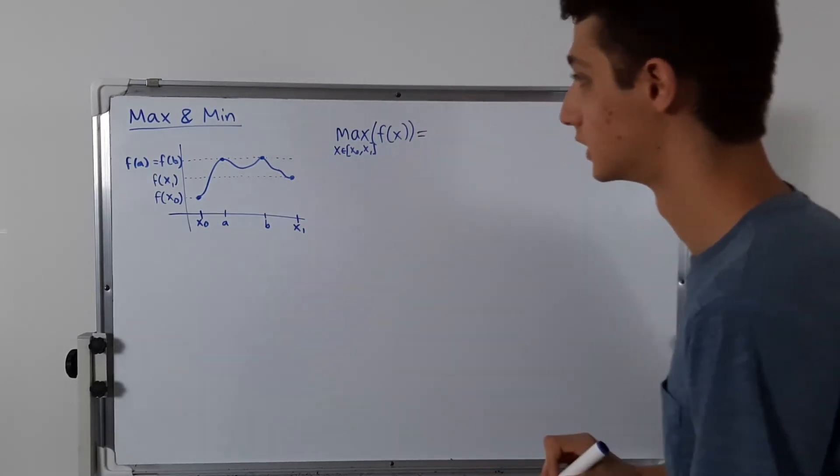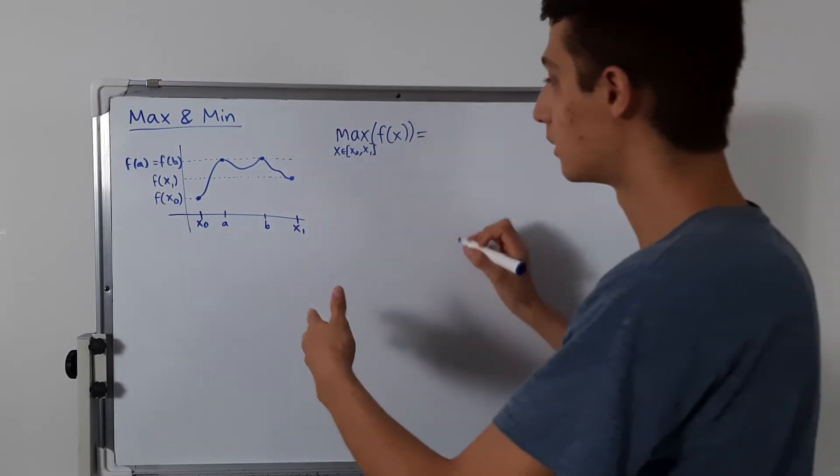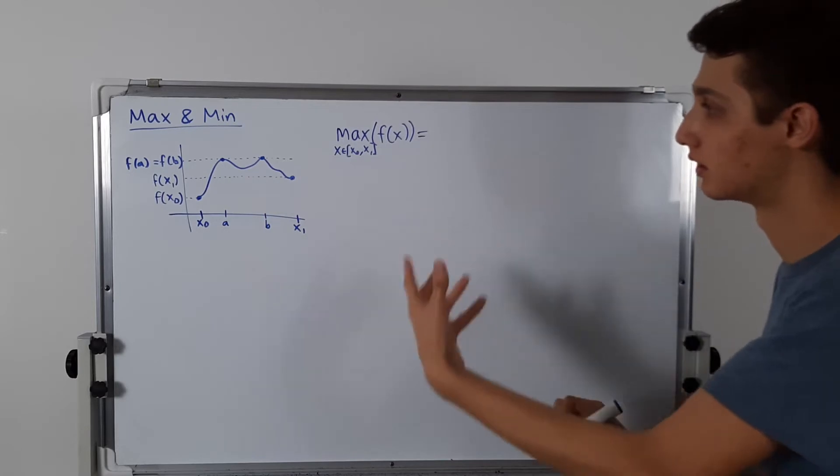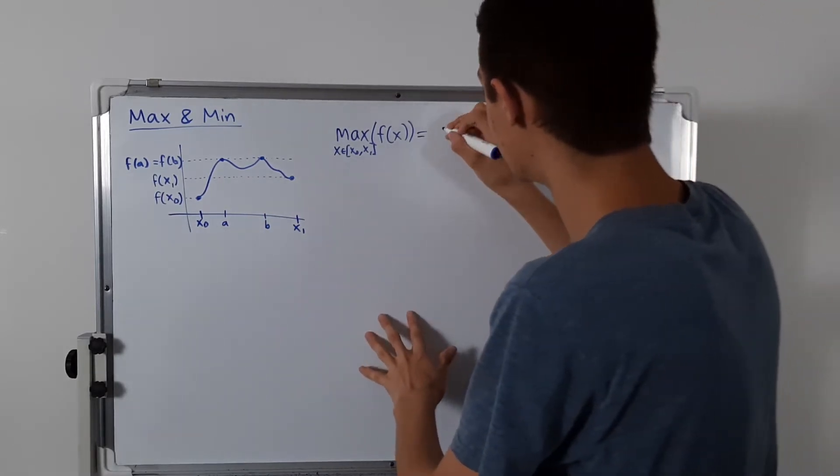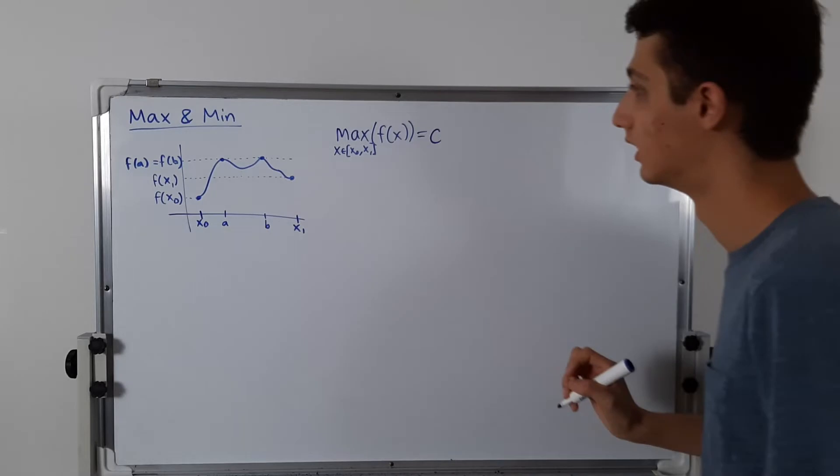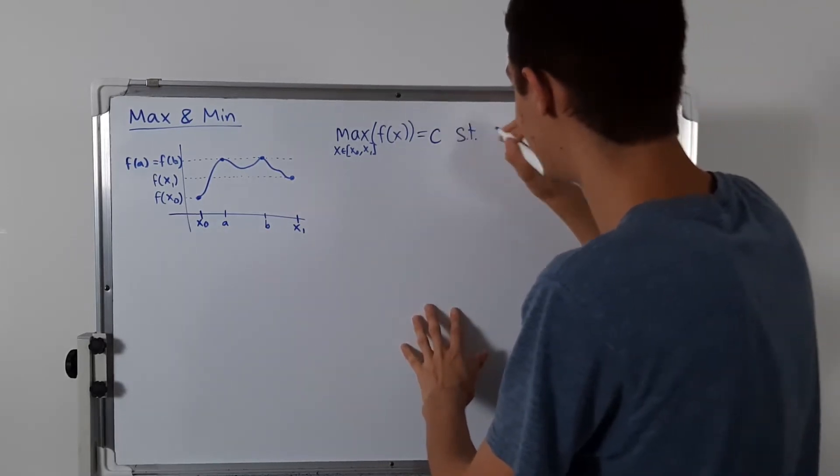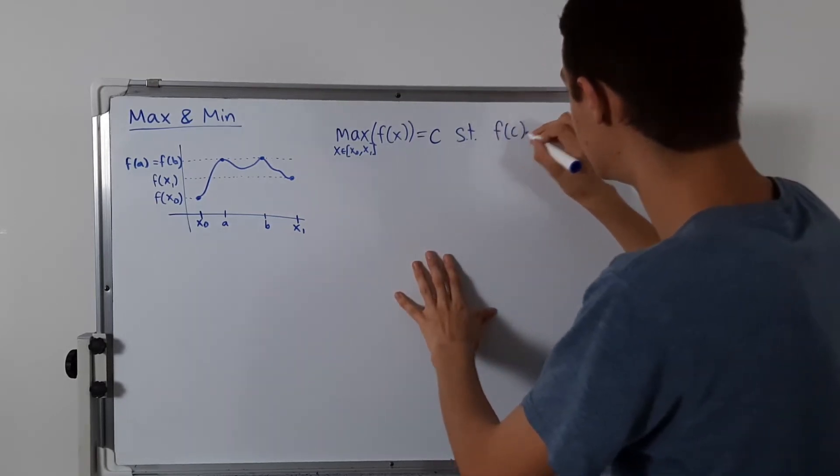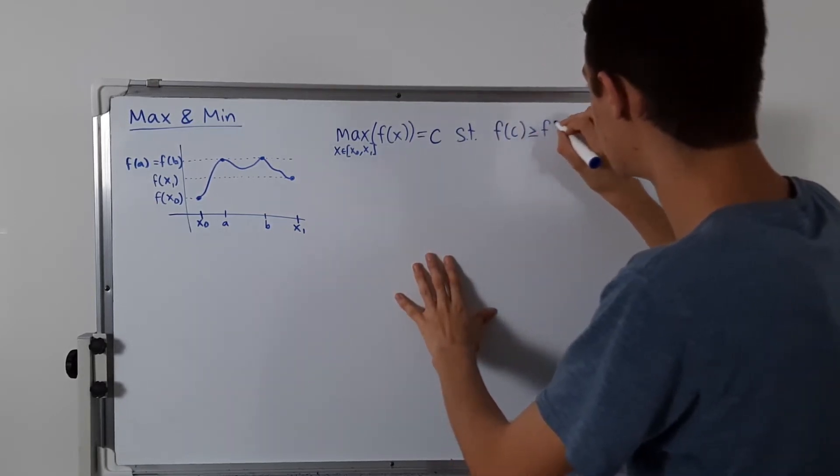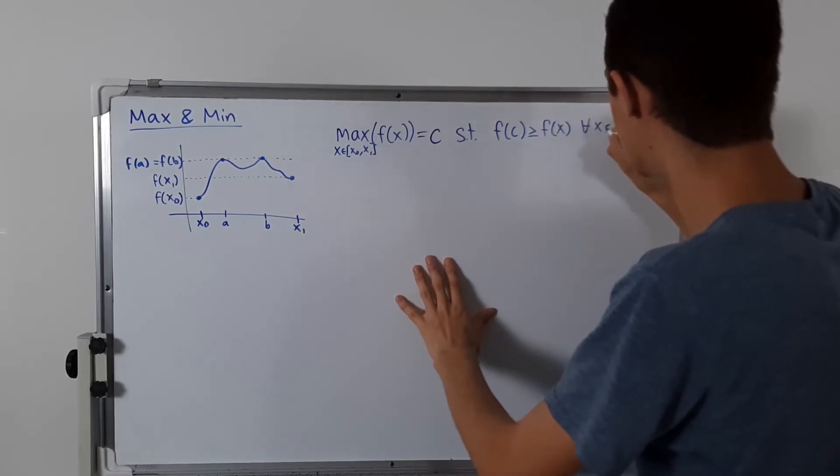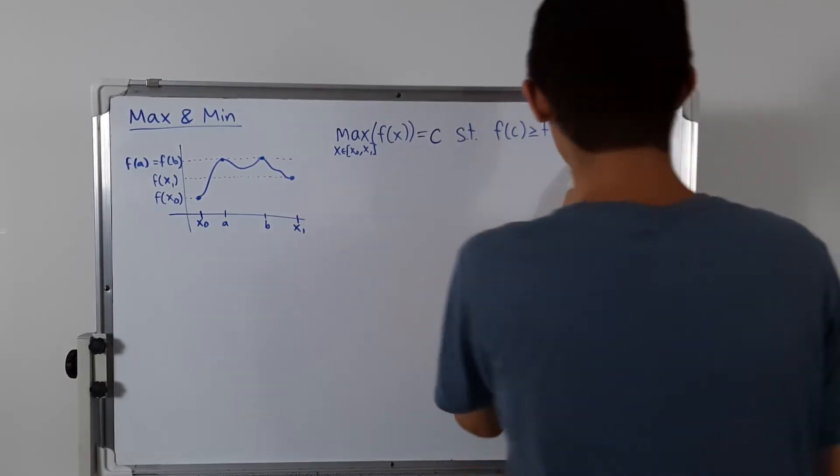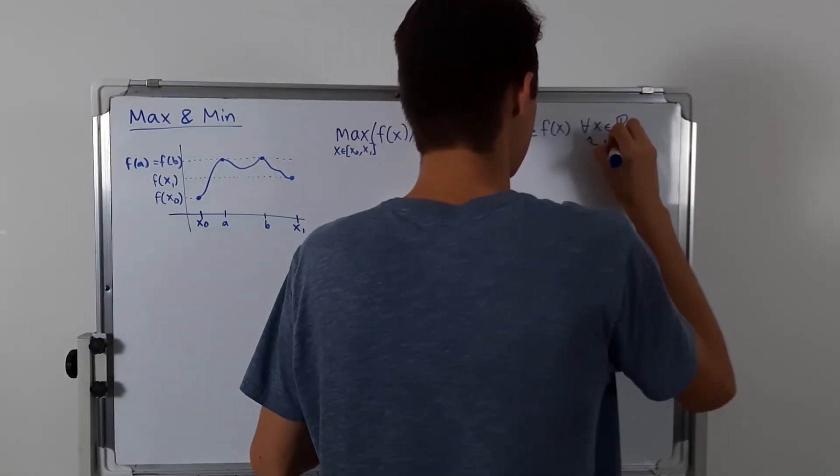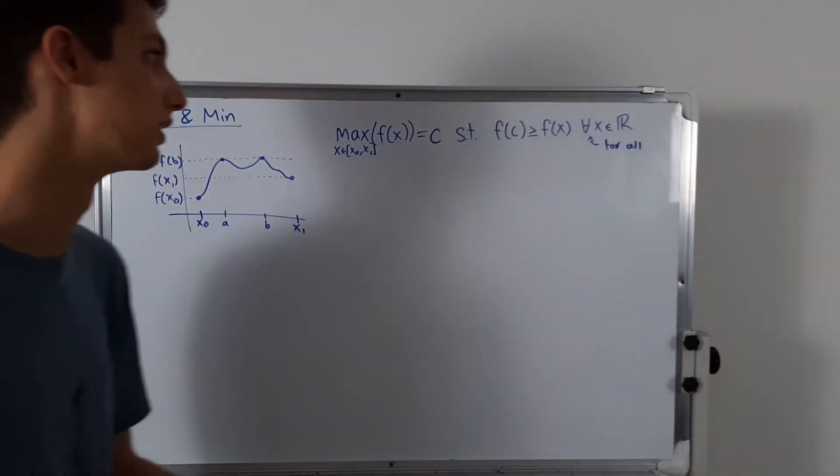So the maximum of this function is equal to some number, and I'm going to stay away from this example. I'm just going to say it's equal to some number, I'll call it c, such that, so such that, that's what that abbreviation means, such that f of c is greater than or equal to f of x for all x in the real numbers. And that's what that symbol means, for all. So I can write that down, that's for all. I just wanted to save some space there.